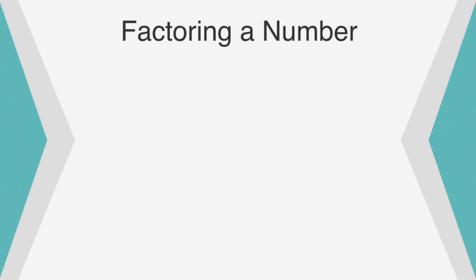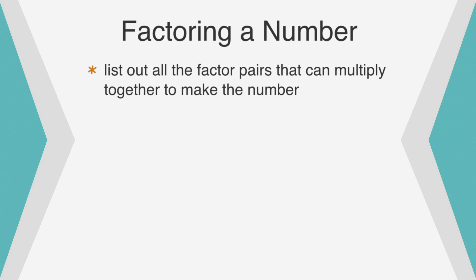To fully factor out a number, we list out all the factor pairs that can multiply together to make the number. The first and most basic factor pair is 1 and the number. This is the same for every number since any number times 1 is the number itself. Now we find another factor, either by recognition or using the rules of divisibility.